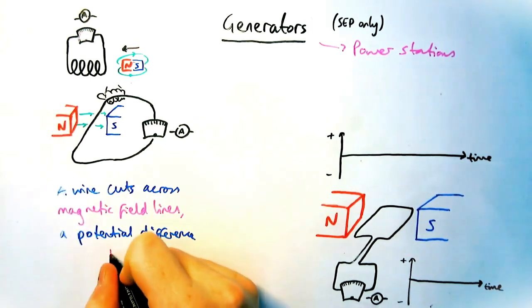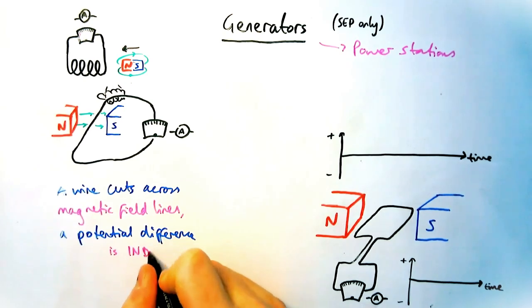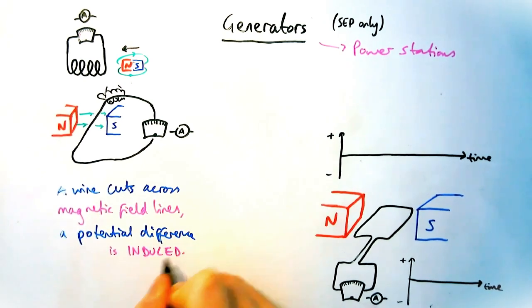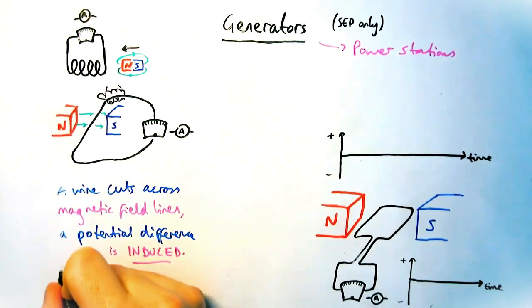So when that occurs, if there is connected to a circuit, then there is also a current that flows as the electrons travel around the circuit.